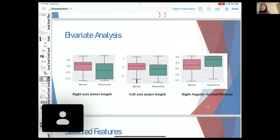Another diagram for bivariate analysis, as you can see, pneumonia often is lower than normal lungs.